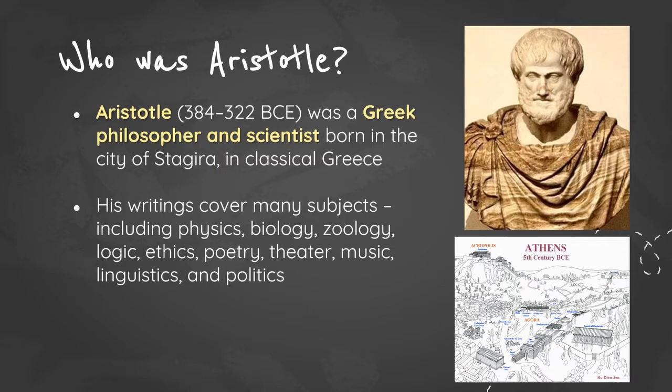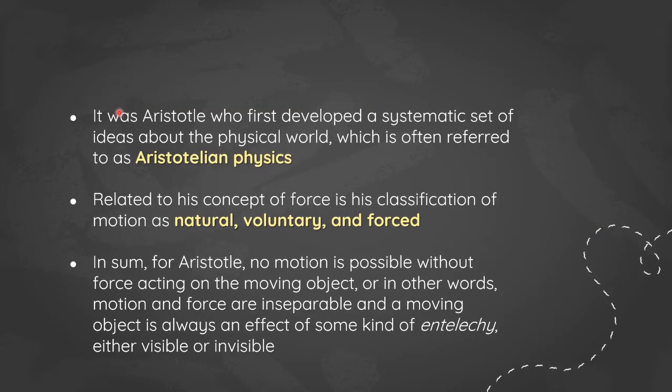Aristotle was a Greek philosopher and scientist. His writings cover many subjects including physics, biology, music, and politics. It was Aristotle who first developed a systematic set of ideas about the physical world, which is often referred to as Aristotelian physics.